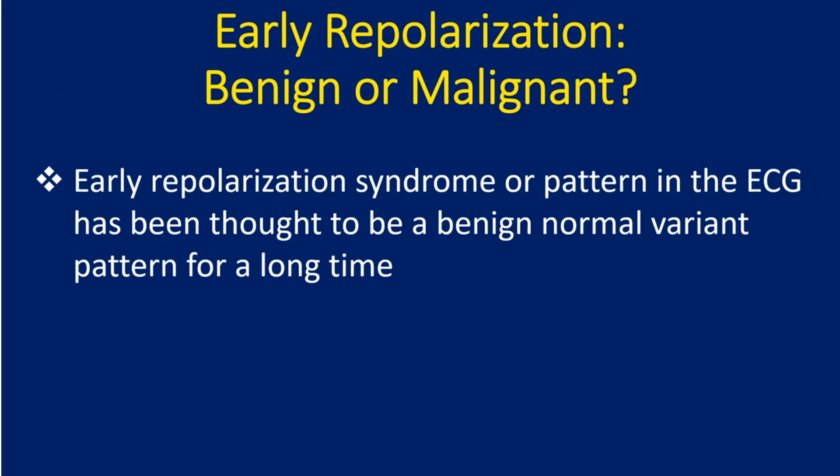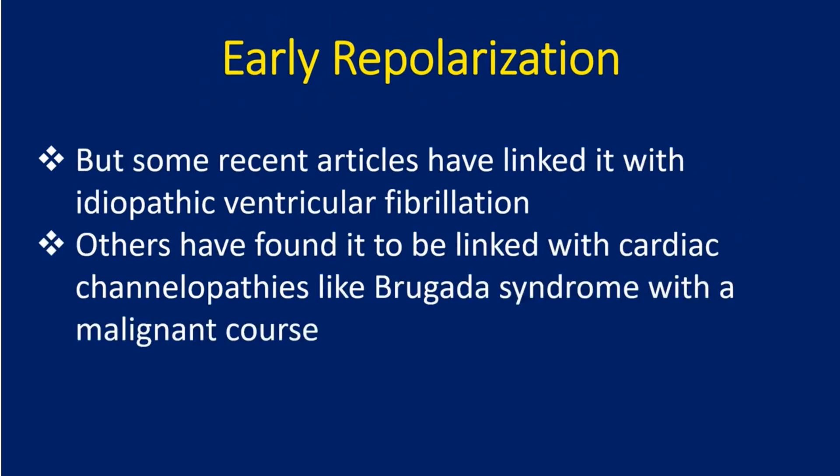Early Repolarization Syndrome or Pattern in the ECG has been thought to be a benign normal variant pattern for a long time. But some recent articles have linked it with idiopathic ventricular fibrillation. Others have found it to be linked with cardiac channelopathies like Brugada syndrome with a malignant course.